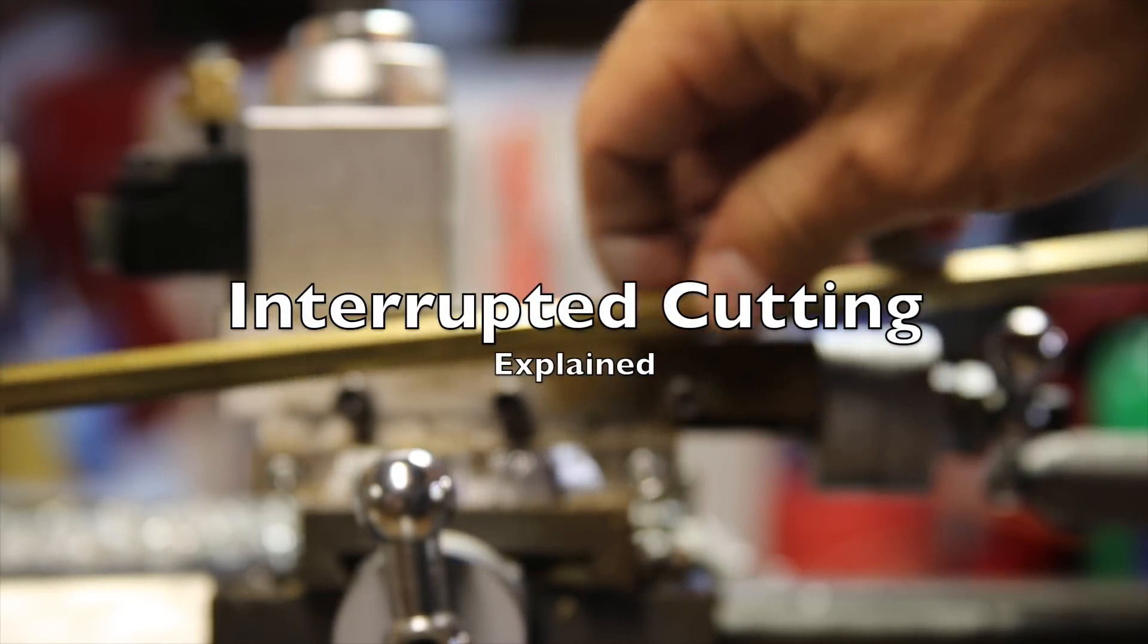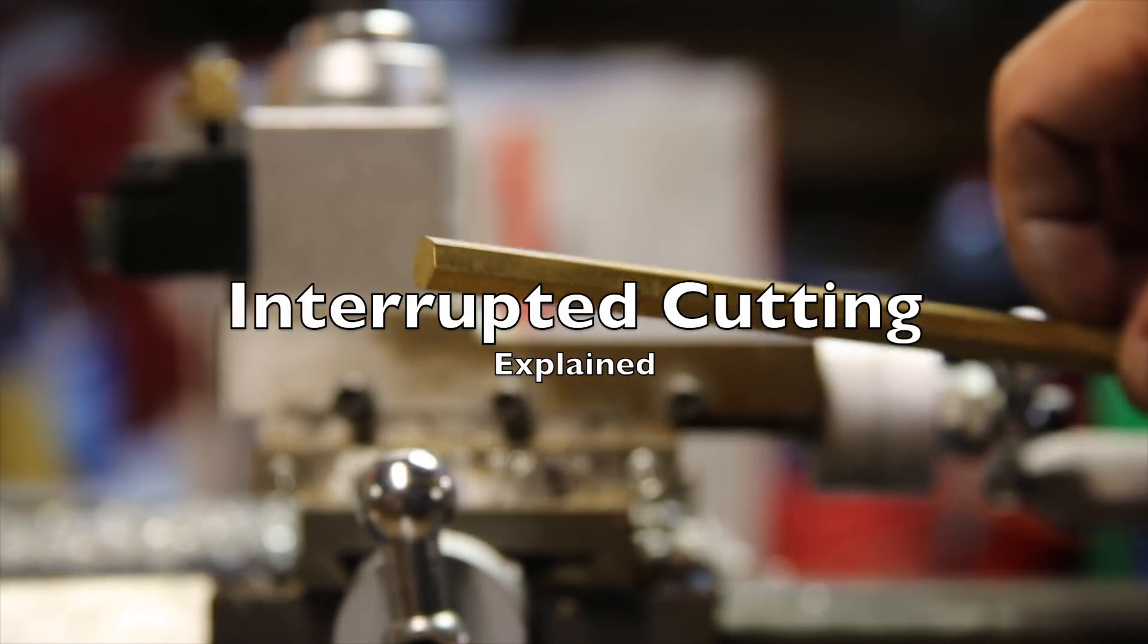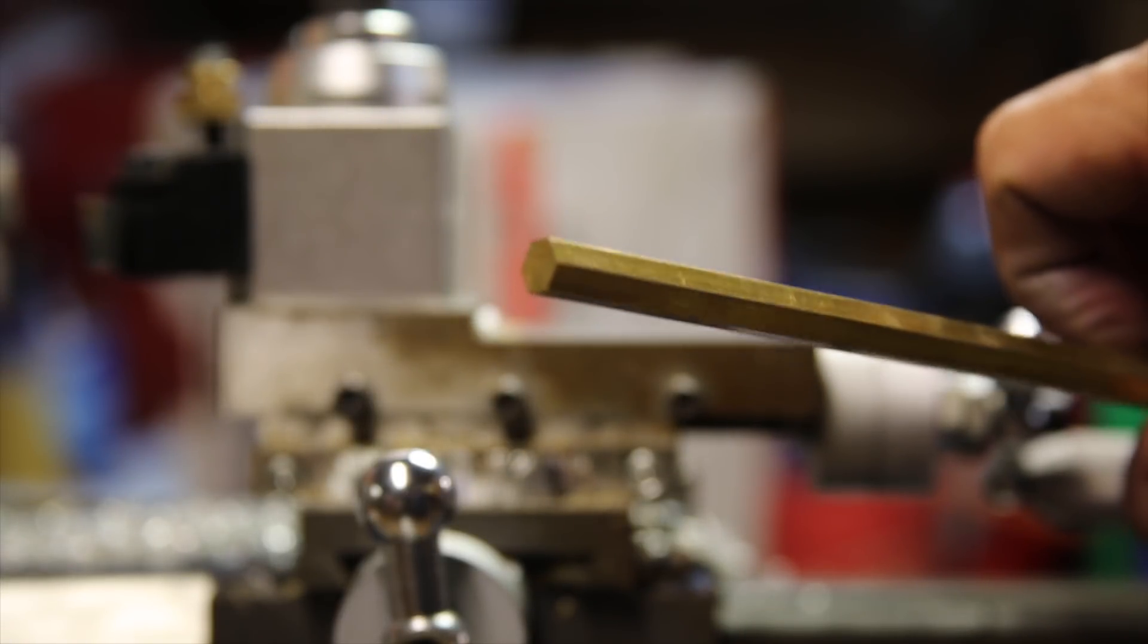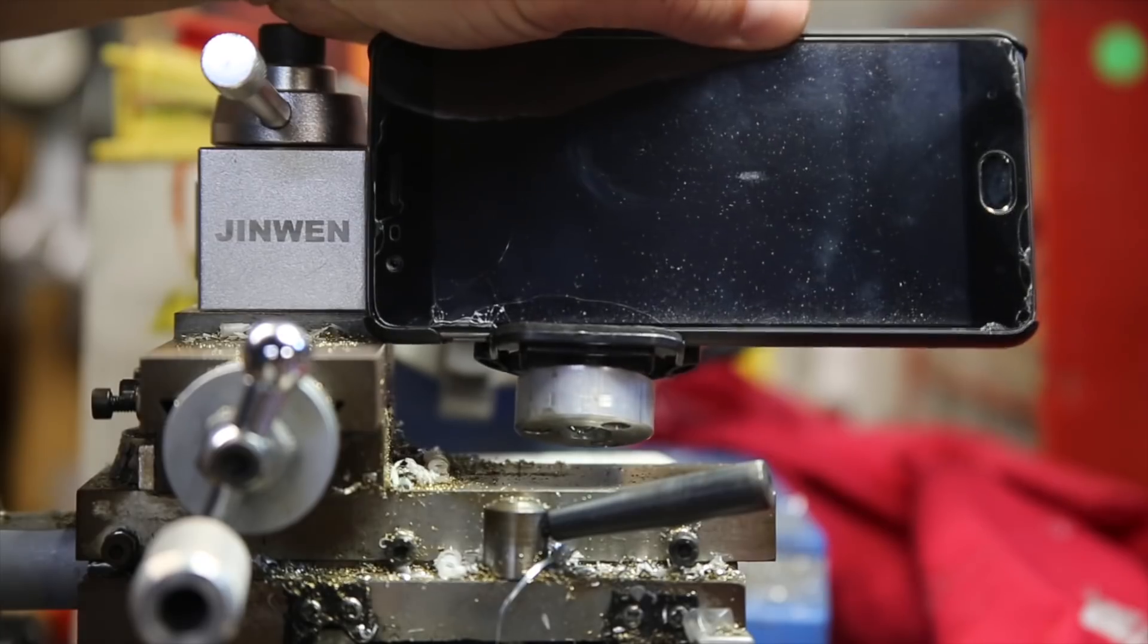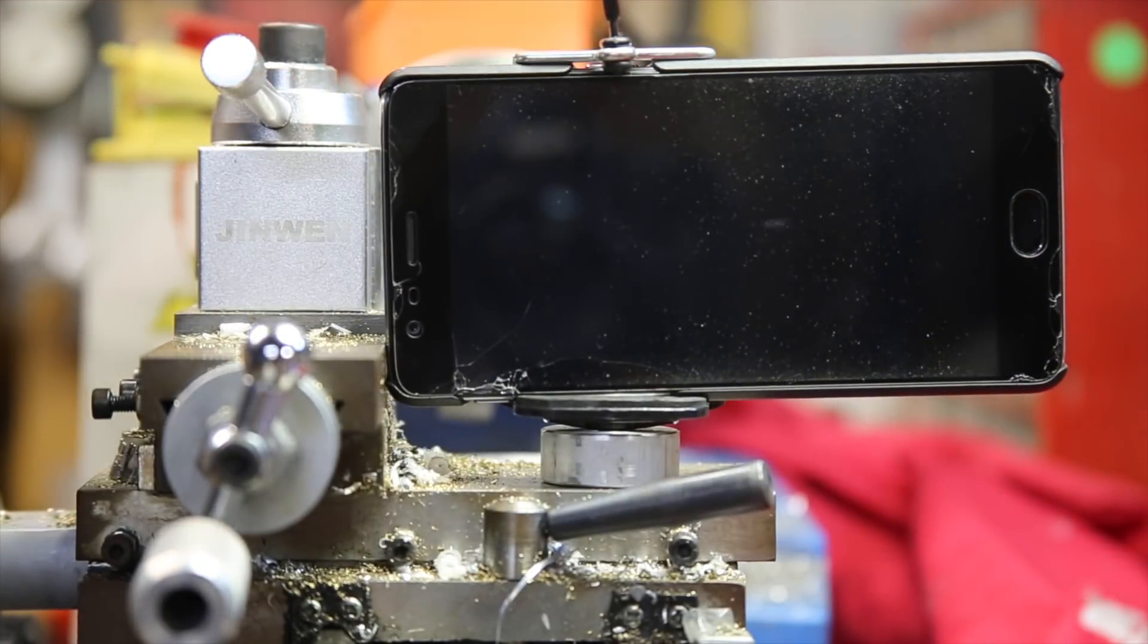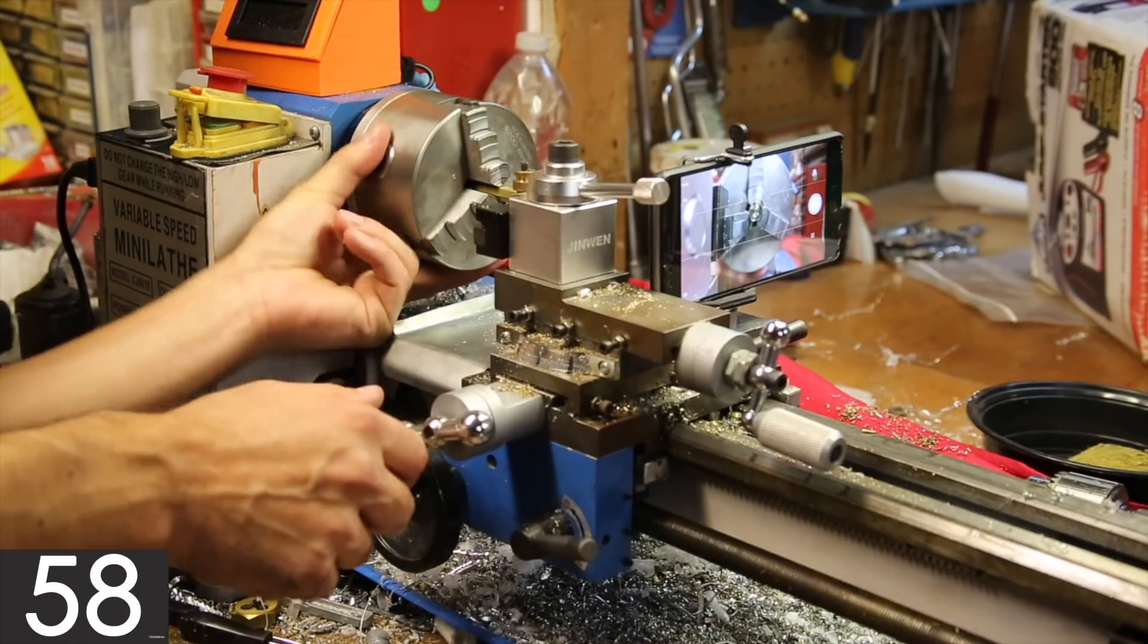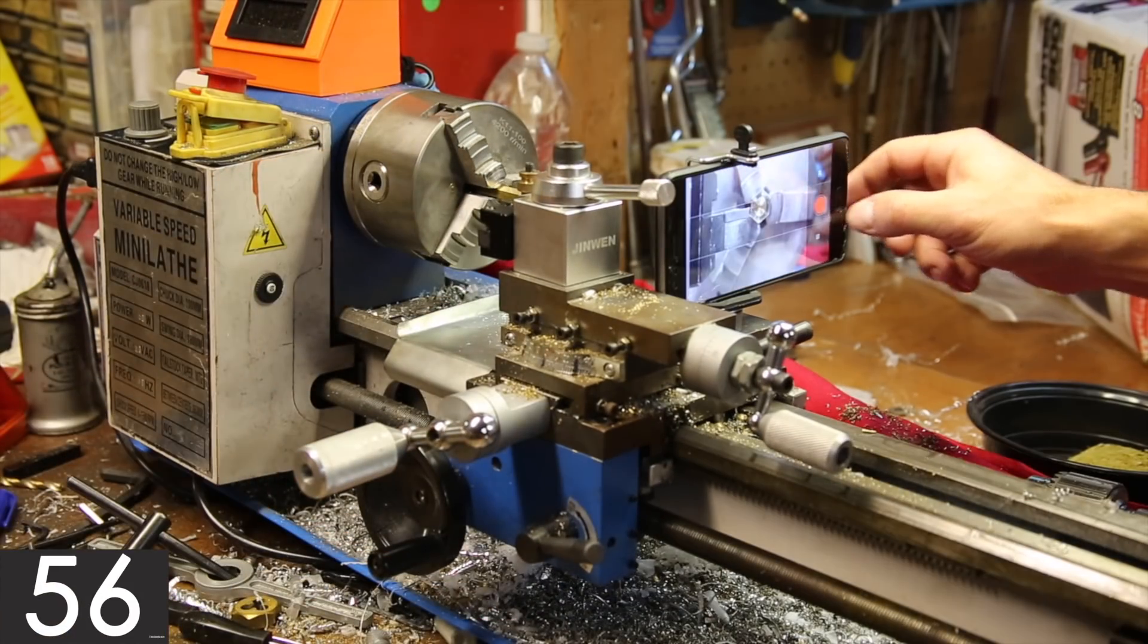This is a quick 60-second explanation of what interrupted cutting is on a lathe. For this tutorial, I'm going to be demonstrating interrupted cutting with a piece of 8mm brass hex stock, which you may recognize from the video making a custom bolt and nut. I will also be introducing a new camera angle using a magnetic base camera mount that I made.